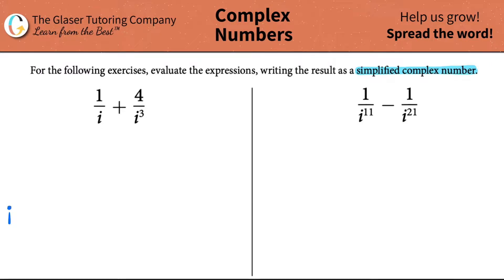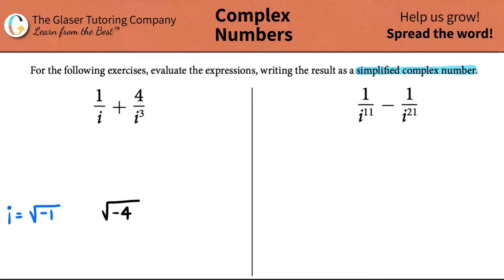i is just an imaginary number. The specific definition for an i value is always the square root of negative one. Remember that when we have square roots, the number below the square root has to be positive in order to get a real value out. So the square root of 25 is five, the square root of four is two. However, if we decide to take the square root of a negative value, this is not a real solution — the calculator will have no idea what to do because it's not a real value.